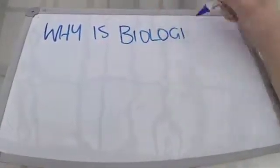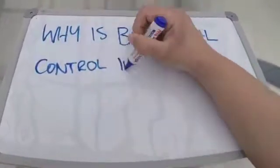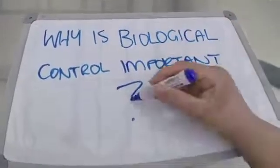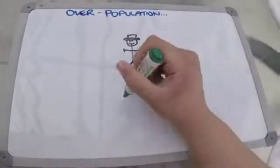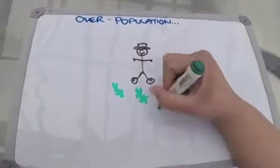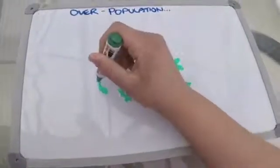Biological control is important as it helps to control the population of pests that can destroy habitats for native animals and crops for humans. For example, if rabbits were not biologically controlled, they'd be overpopulated.